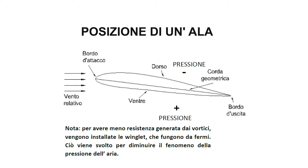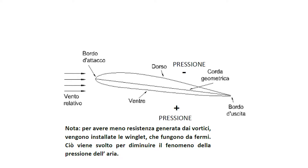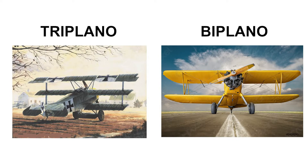Un'ala, struttura rigida generalmente suddivisa in due semi-ali, permette il sostentamento in aria durante tutto il volo. Un aeromobile può possedere la caratteristica di una o più ali, per esempio biplani, triplani ecc.